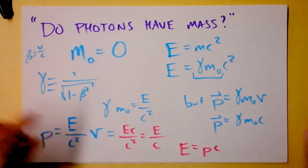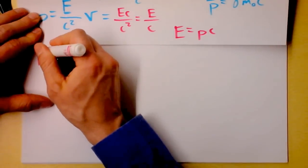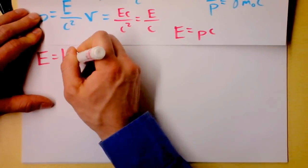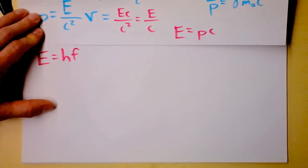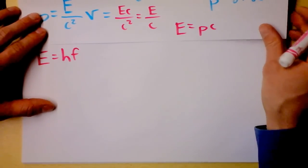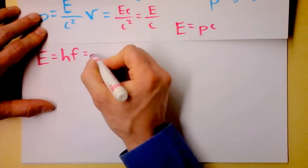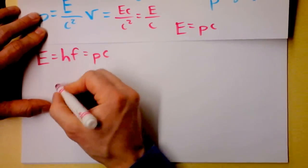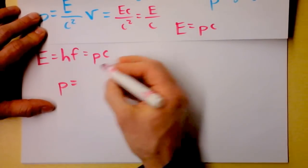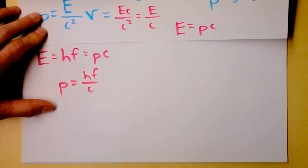But remember Einstein's famous conclusion about photons. Einstein will tell you that the energy of a photon is Planck's constant times the frequency of the photon. So we could set these two equal to each other. We can say that Planck's constant times the frequency of the photon is P times C. And then I might be interested in finding the momentum of a photon in a new way. Then it's just Planck's constant times the frequency of the photon divided by the speed of light.